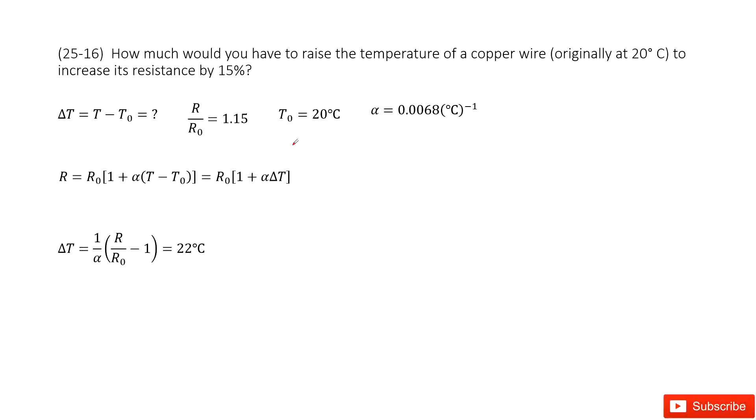We need to find temperature changes. For a copper material, the original temperature is 20 degrees and the resistance increased by 15%.